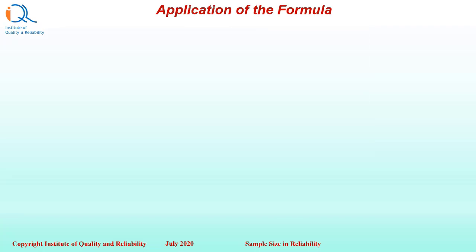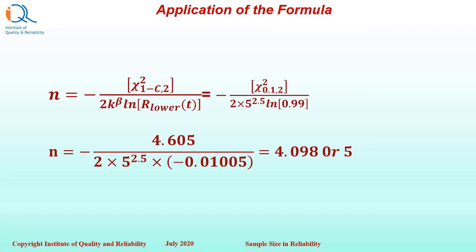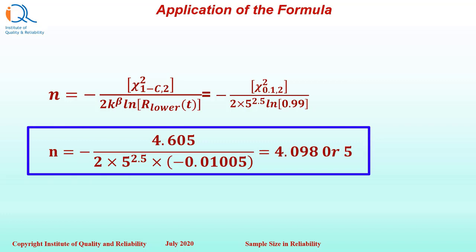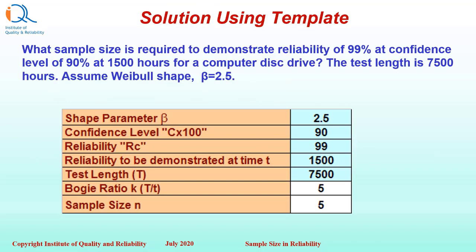We substitute this Chi-square value in the equation and we can see that n equals 4.098 or we can round it off to 5. You can also use a template from Institute of Quality and Reliability. We will show you how to download and use this template.